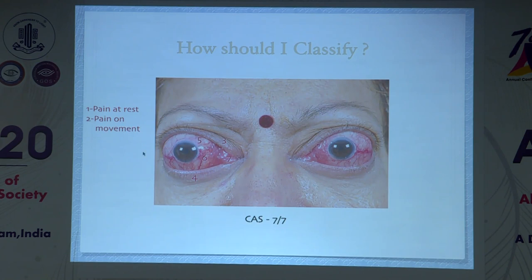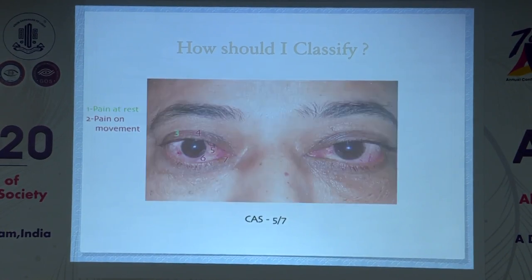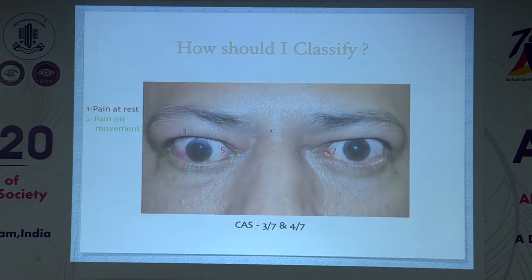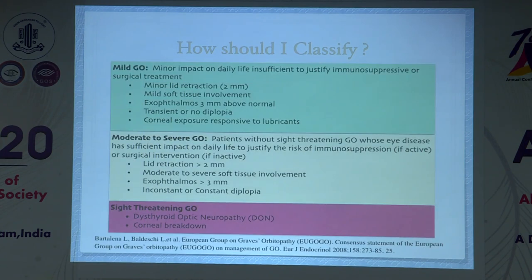For example, a patient with pain on movement scores one point each, and if she also has eyelid edema, erythema, conjunctival injection, chemosis, and caruncular edema, she scores seven out of seven. A score of four or more indicates clinically active disease. In cases of asymmetric disease — for example, one eye scoring three and the other having caruncular involvement giving a score of four — we take whichever score is higher. EUGOGO further classifies disease into mild, moderate-to-severe, and sight-threatening Graves' orbitopathy based on lid retraction, exophthalmos, and diplopia.